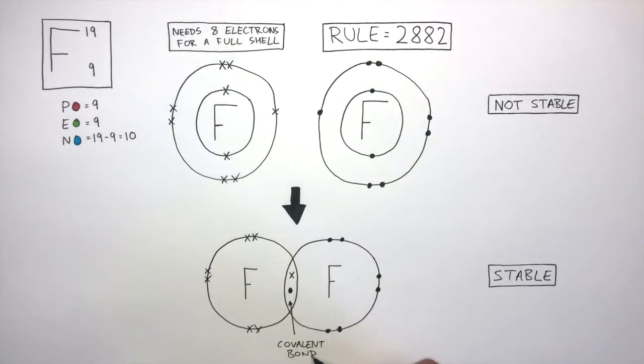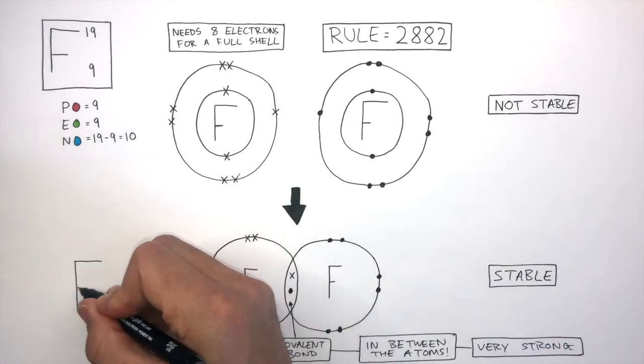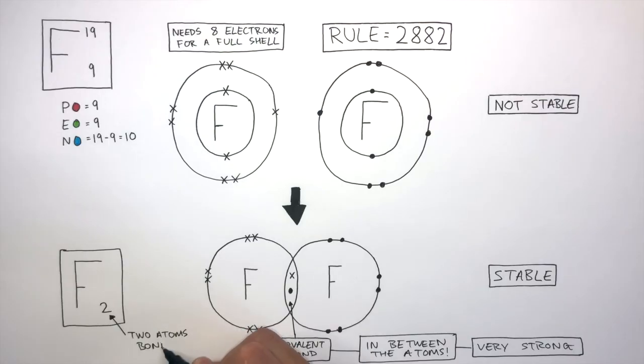This is a covalent bond which is a shared pair of electrons. It takes place in between the atoms and is very strong which means a lot of energy is needed to break covalent bonds. The molecular formula is F2 where there are two atoms bonded.